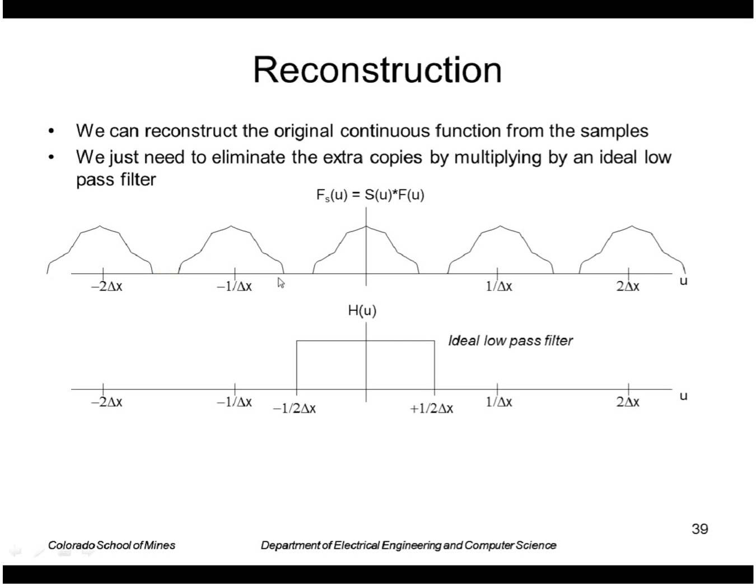I can do that by multiplying a rectangle function that's 0 everywhere out here and 1 over here. This is an ideal low pass filter because it passes without change anything that has low frequencies and zeros out anything that has high frequencies.